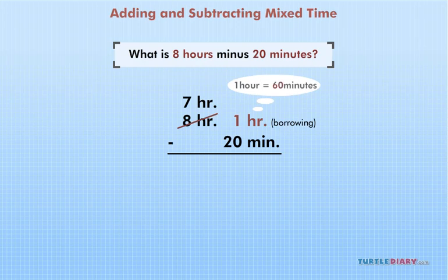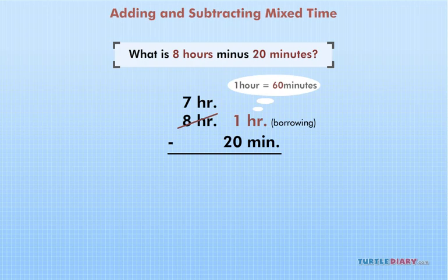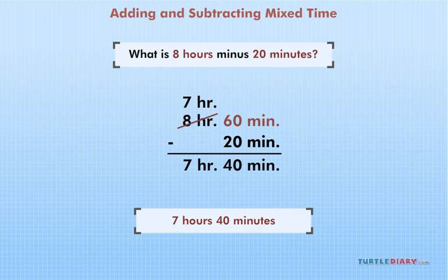So, when we borrow one hour, we are borrowing 60 minutes. Now we can subtract both columns. And that's it! Final answer, 7 hours 40 minutes.